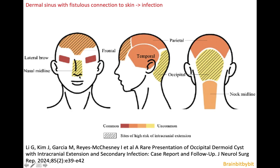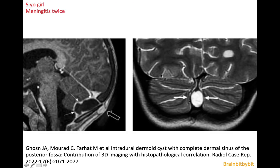This is a drawing that illustrates the most common locations of dermoid cysts, and the striped regions often have intracranial extension. This is an example of a dermoid cyst with a dermoid sinus tract. The dermoid cyst is located in the posterior fossa, and you can see the connection to the subcutaneous area.